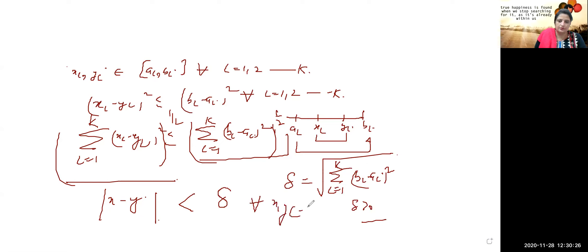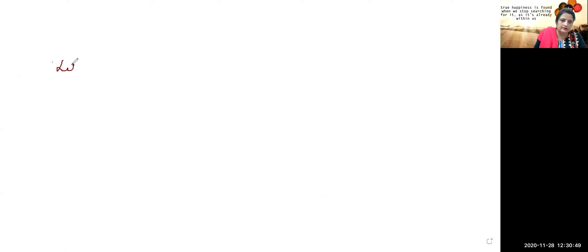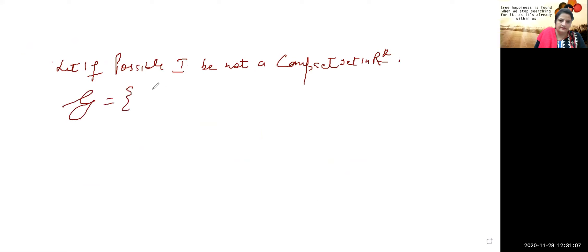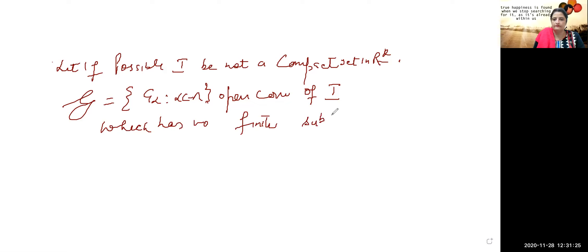This is a small point which was the first thing to establish. Now, what do we need to prove? We need to prove that the k-cell I is compact. We prove compactness the same way as before — by contradiction. Let if possible I be not a compact set in ℝᵏ. That means it has an open cover {G_α}, α ∈ Λ, which is an open cover of I that has no finite subcover.